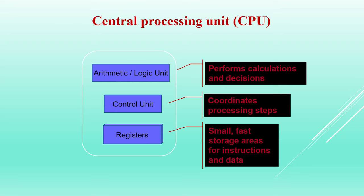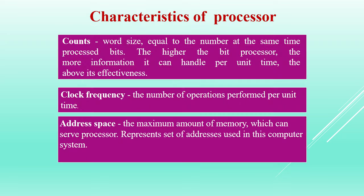The main devices of a PC include ROM, RAM, the processor, and the system bus. The system bus includes the data bus, address bus, and control bus. Controllers include the keyboard controller, printer controller, display controller, and track controller. Now let's talk about the system bus.